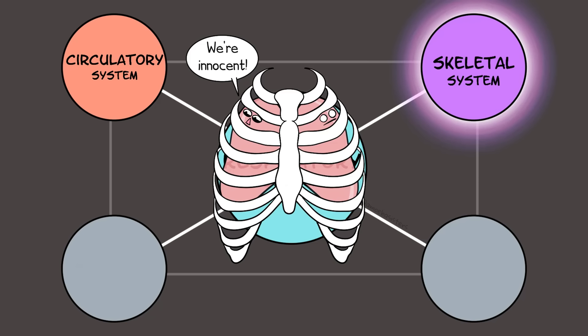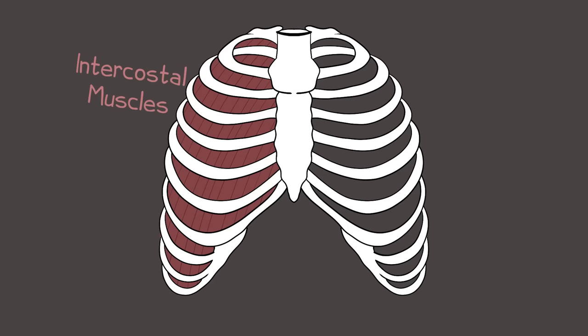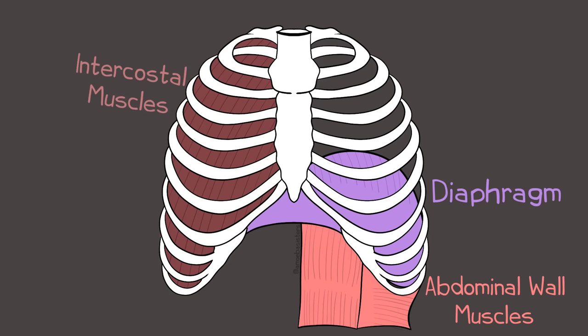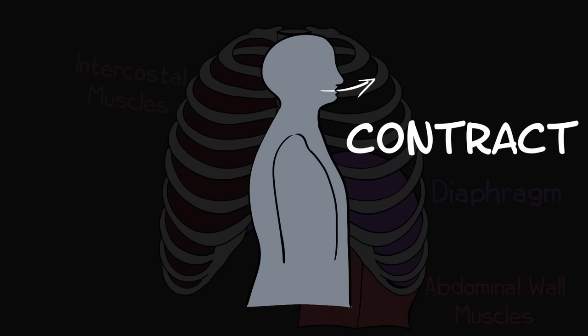Other body systems work with the respiratory system too. The skeletal system includes the ribs that protect the lungs like a cage. Muscles of the muscular system are also involved — muscles between your ribs called intercostal muscles, a major muscle under your lungs called the diaphragm, and abdominal wall muscles. All of these help to expand or contract the thoracic cavity.